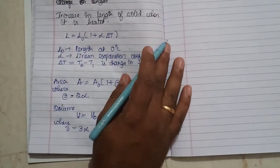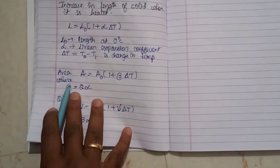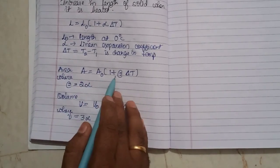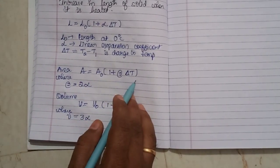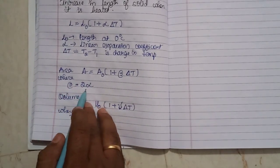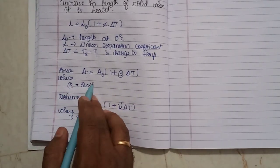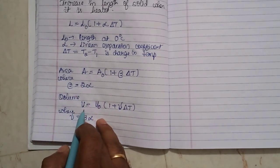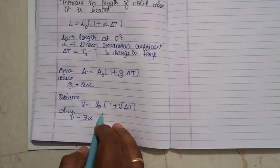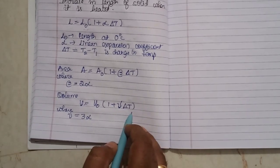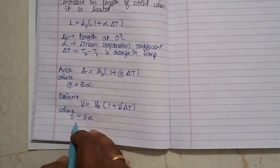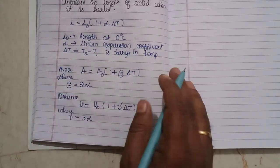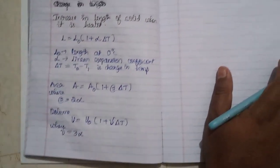Similarly, when there is an increase in length, there will be an increase in area, given by A equals A0 into 1 plus beta into delta T, where beta equals 2 times alpha. Then as there is an increase in area, there will also be an increase in volume, given by V equals V0 into 1 plus gamma into delta T, where gamma equals 3 alpha. These formulas will be used to solve the problems.